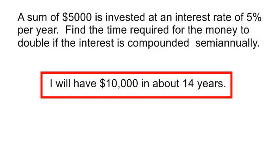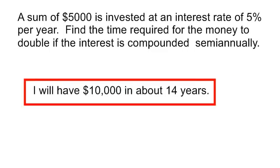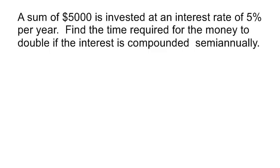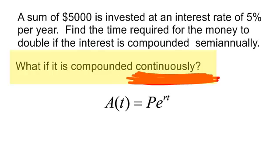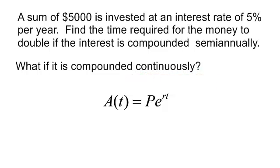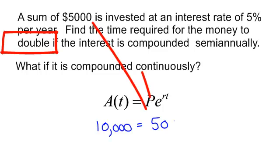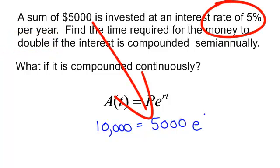Now, I want to use this same problem and instead of semi-annually, what if it is compounded continuously? Well, then I have to use my PERT formula. Let's fill in the basic information. I want to know when I have $10,000, how much money am I going to put into the bank? It will be $5,000 E. The rate at 5%, that will be 0.05. And I'm looking for the time. I don't know the time.